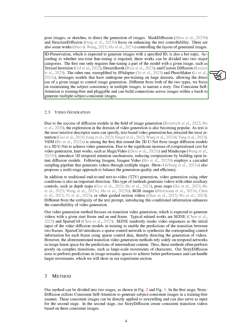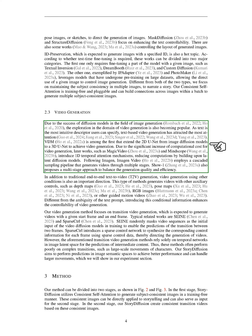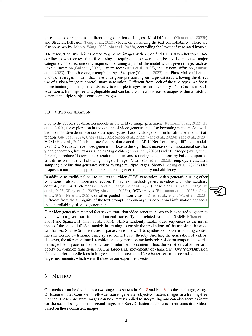Moving on to video generation, the success of diffusion models in image generation has spurred interest in video generation. Text-based video generation has garnered significant attention due to its intuitive nature. Methods like VDM have extended 2D-UNET to 3D-UNET for video generation. To address the computational cost associated with video generation, newer works like Magic Video and MindScope have introduced 1D temporal attention mechanisms, reducing computations by building on latent diffusion models. Imagine Video and Show One have proposed multi-stage approaches to balance generation quality and efficiency. Apart from traditional text-to-video generation, there is a growing interest in video generation with additional controls such as depth maps, pose maps, RGB images, or guided motion videos.